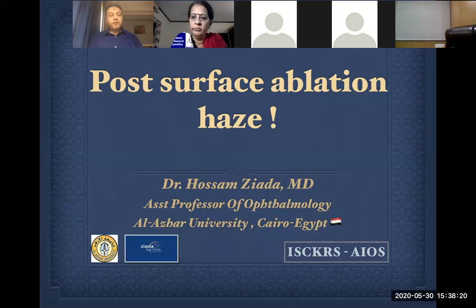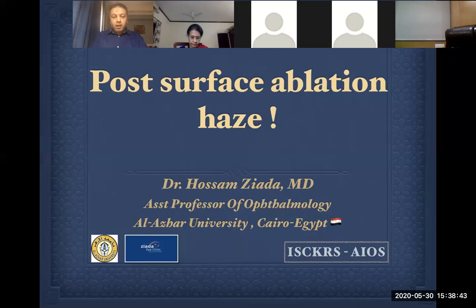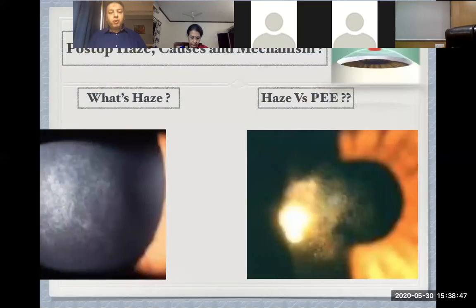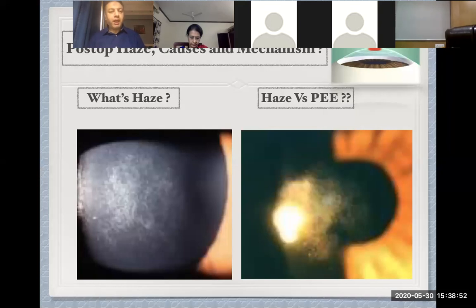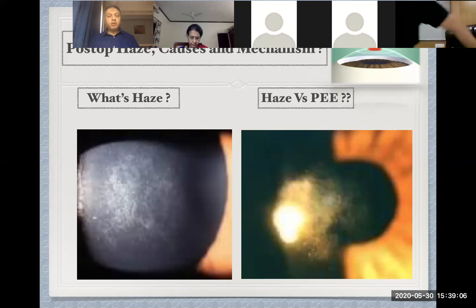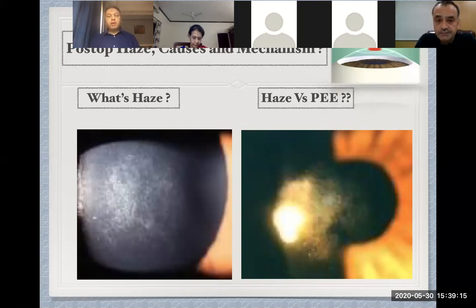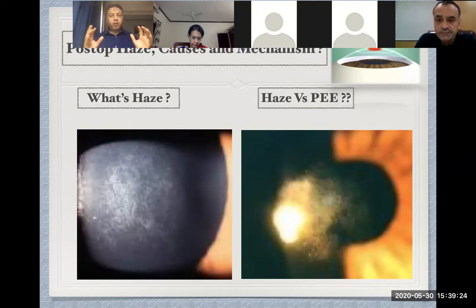One of the nightmares of surface ablation is post-operative haze. Surface ablation includes PRK (photorefractive keratectomy), LASIK, and LASEK — where the epithelial flap is formed by alcohol — and epi-LASIK, formed by a plastic keratome. My talk will emphasize the part of haze: the causes and the mechanism of haze. Corneal haze is defined as sub-epithelial or superficial anterior stromal opacification of the normally clear cornea following surface ablative procedures. In one word, it is over-healing.